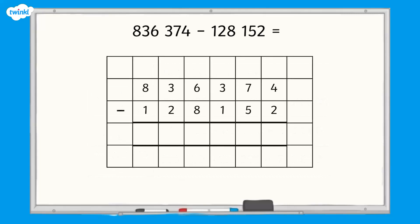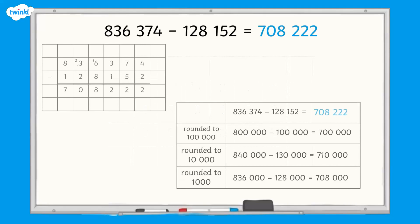Let's use the written method now. So the answer to the calculation using our written method is 708,222. Let's see if this is close to our estimations. It is, so it's more likely to be correct.